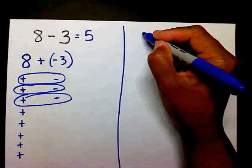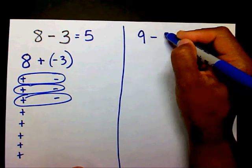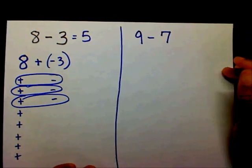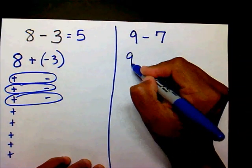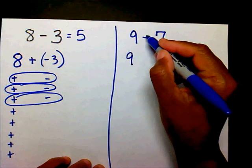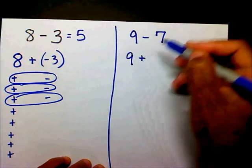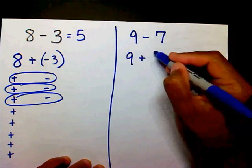Here's another one. 9 minus 7. Bring your 9 down. You want to add, so change your subtraction to addition. The opposite of 7 is negative 7.